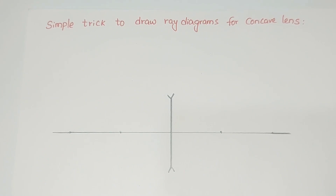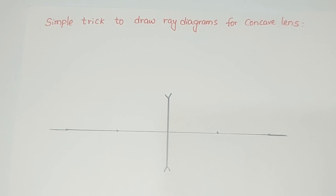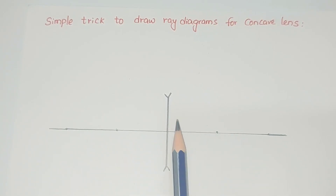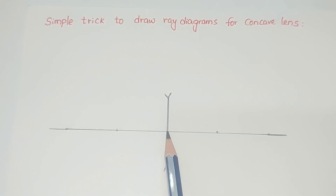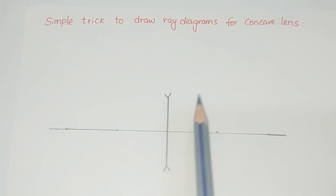Now I would like to show how to draw a ray diagram for a concave lens. For this also, we have to draw a line of 12 centimeters and mark the points at 0 centimeters, 3 centimeters, 6 centimeters, 9 centimeters, and 12 centimeters. At the middle of the line, we have to draw a normal which represents the concave lens.